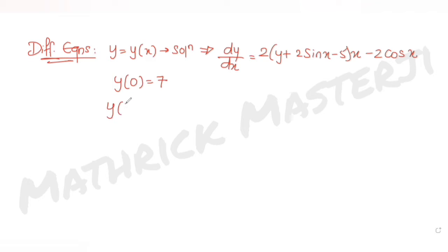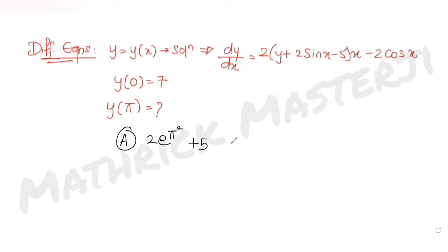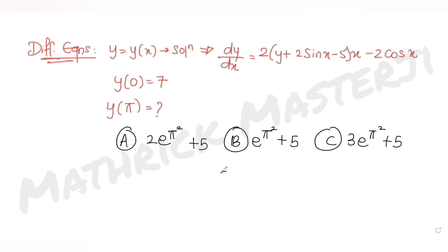The question is asking us to find what y(π) equals — basically, at x = π, what is the value of y? The answer choices are: (A) 2e^(π²) + 5, (B) e^(π²) + 5, (C) 3e^(π²) + 5, and (D) 7e^(π²) + 5. We need to figure out which one is correct.